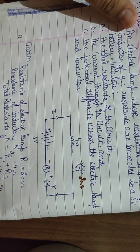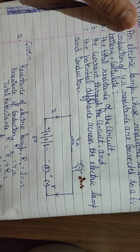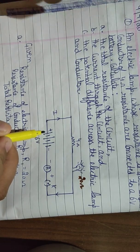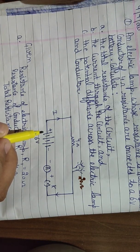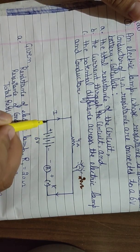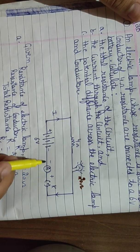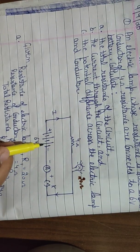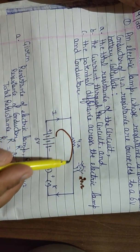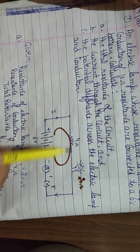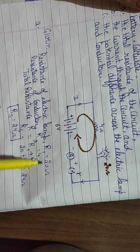Now let's see how to solve this question. First we need to check whether these two components are in series or parallel, because only then can you move forward. As I told you, when the entry point and exit point are the same — meaning there is only one path — that situation indicates series. Current from the positive terminal goes through the 4 ohm resistor, then through the 20 ohm resistor, and exits at the negative terminal. There is no other path, so this is a series circuit with only one path.